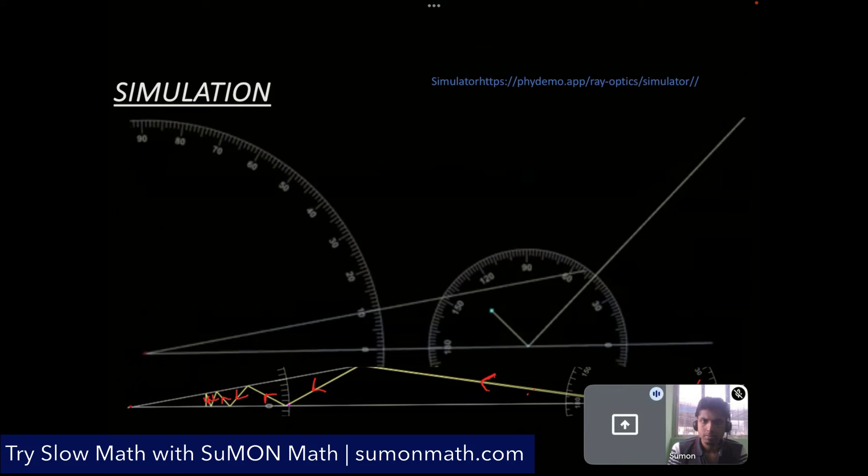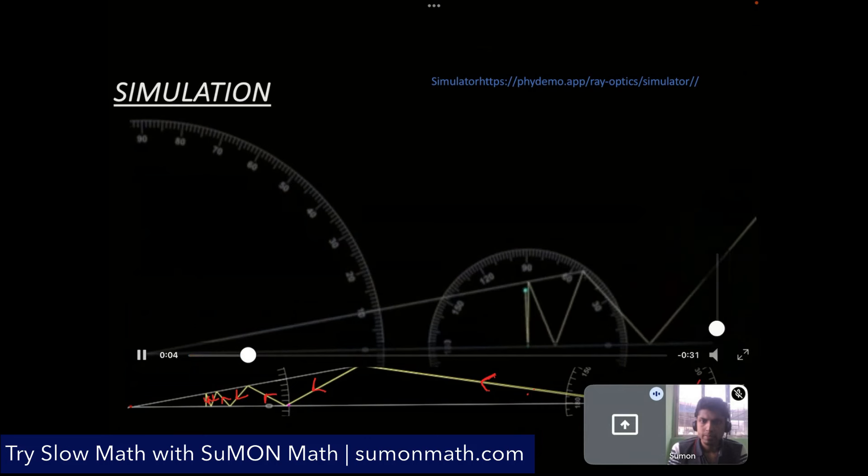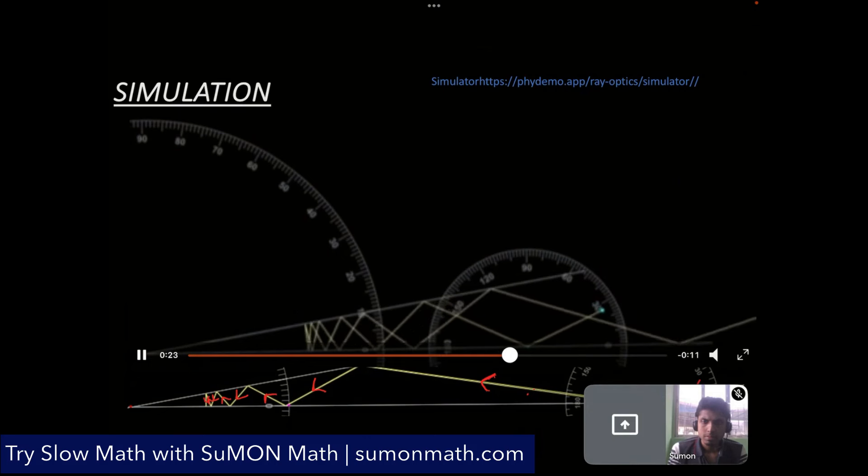Now we can use the simulation to understand this. So basically the angle between the two mirrors is 10 degree. And we are changing the angle of incidence. And we observe that after every 10 degrees, the light is retracing its path. And this matches our theoretical observation. So the number of incidence is increasing by one after every 10 degrees.